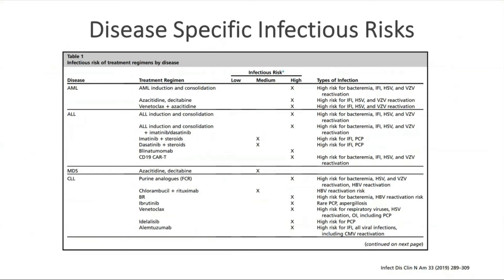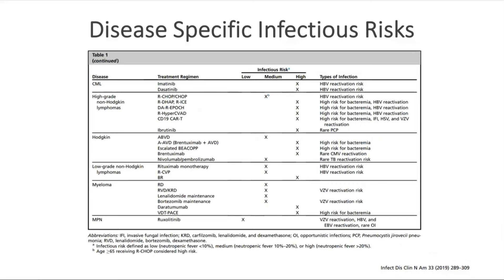The next slides include a table covering diagnosis and treatment regimens with corresponding infectious risks and the types of infections patients are at risk for. AML and ALL patients are at high risk for infection unless they receive less aggressive chemotherapy. Medium infectious risk conditions include myeloma, low-grade non-Hodgkin's lymphoma, and Hodgkin's lymphoma — always pay attention to the chemotherapy regimen chosen.